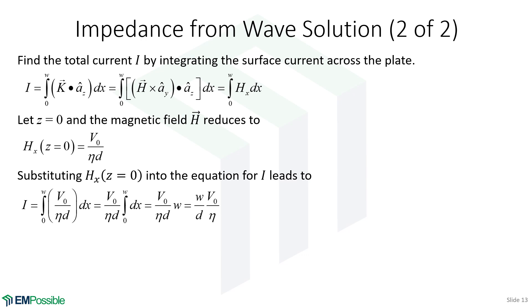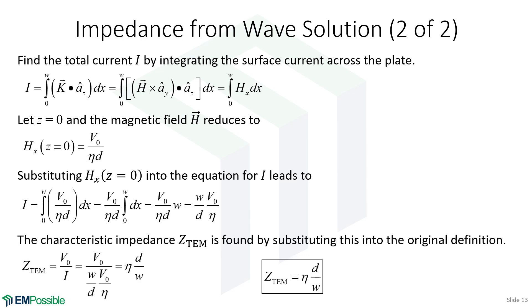Now we can calculate the characteristic impedance. It's V0 — the applied voltage — divided by I. We plug in our expression for I, the V0 terms cancel, and we end up with a clean expression: impedance equals the medium impedance times D over W. A good check is that voltage and current do not appear in the final expression, as the impedance of a linear system should be independent of them. Note that this expression is really only valid when the parallel plate is very wide. When it becomes narrower, the approximation breaks down, and for very narrow plates the formula may only be accurate to an order of magnitude.